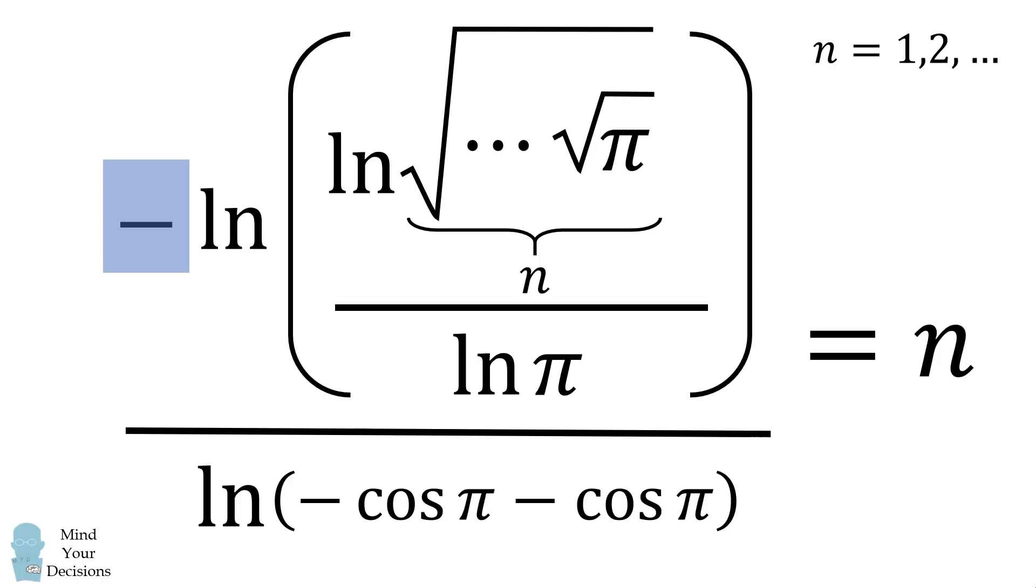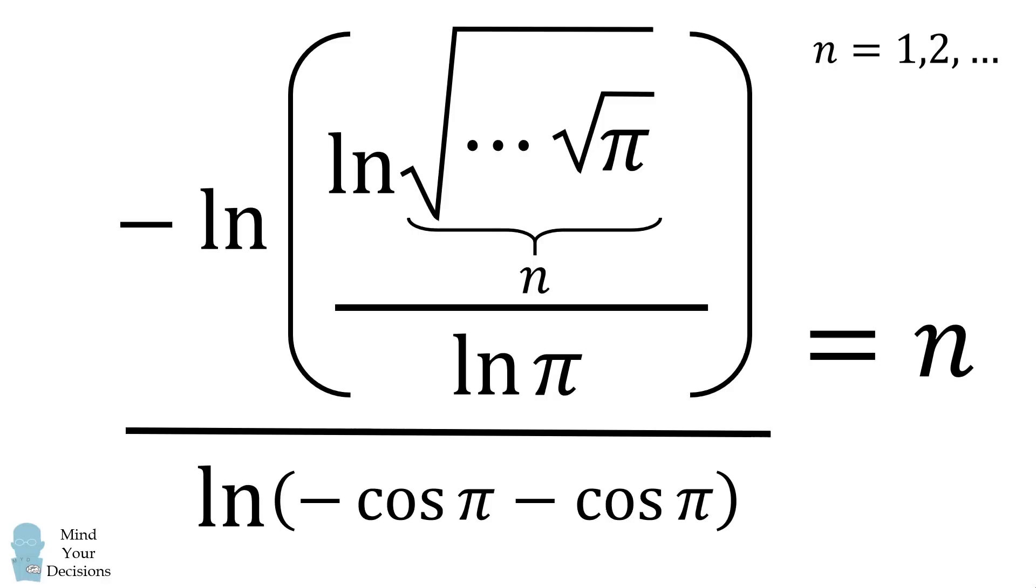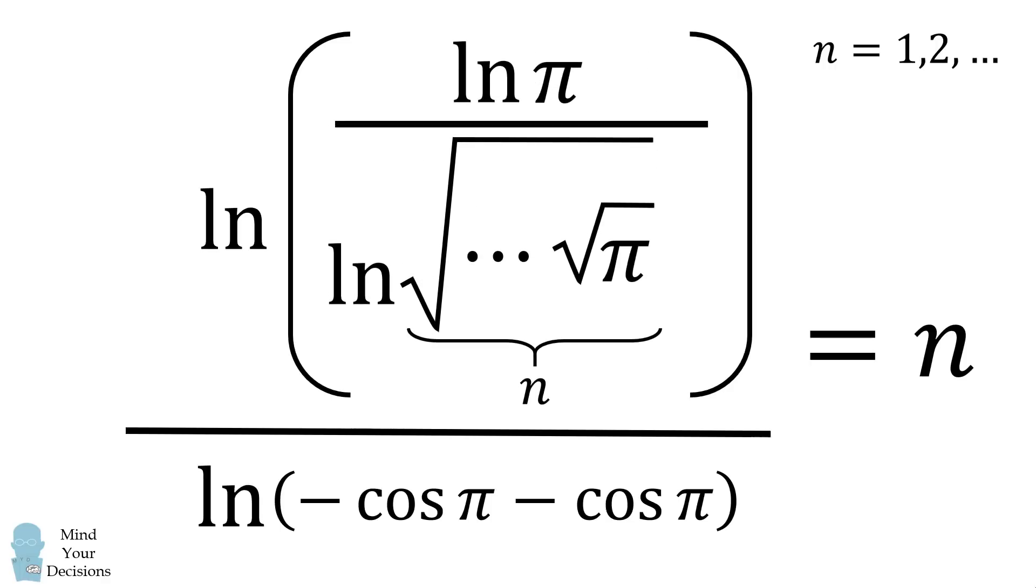Now we have a negative sign at the beginning, which we can cleverly eliminate by taking the reciprocal of this argument. This will make the formula a little bit easier to read.